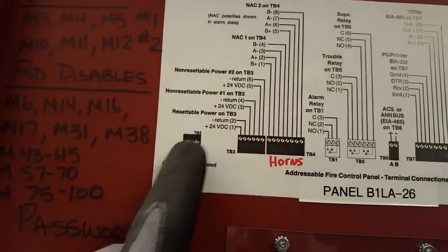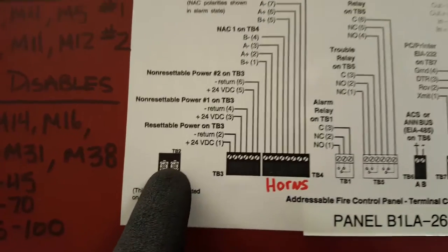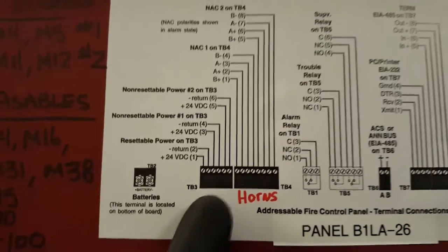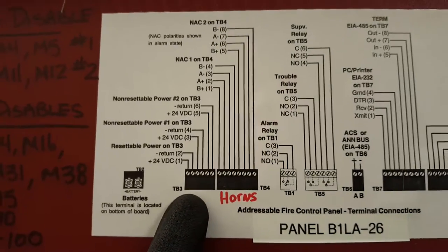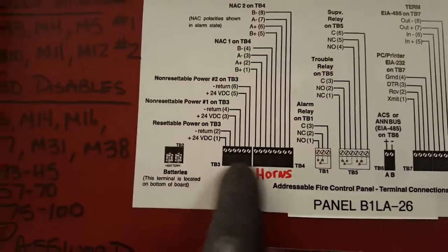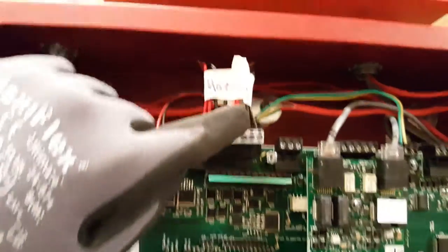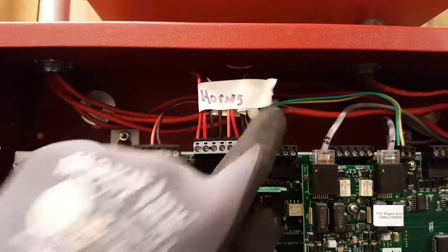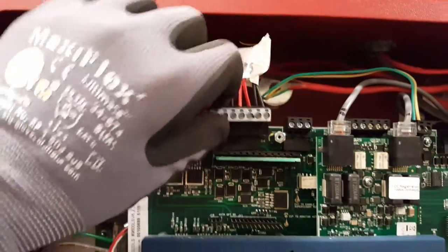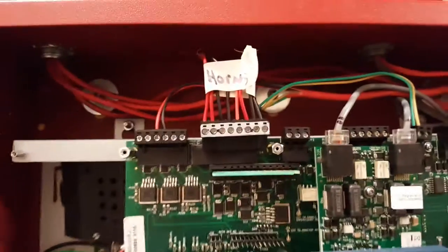You have the first one here, which is labeled TB2, then TB3, then TB4, so you're looking for these two larger connections. As you see here, they even labeled it for the horns, and you have these two larger connections: TB3 and TB4.